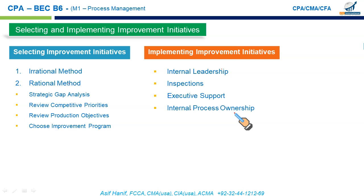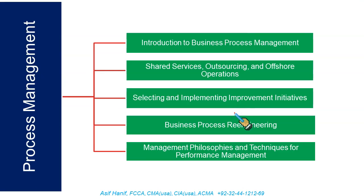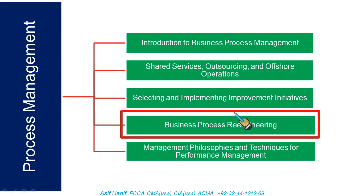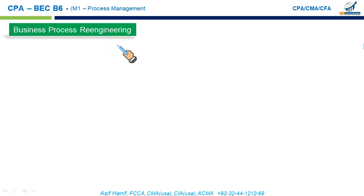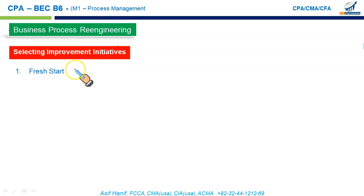Business process re-engineering involves the destruction of an already constructed process and starting from ground zero. It is a fundamental re-thinking and radical change aimed at improving service, cutting costs, or enhancing competitiveness. It is considered very risky. Unlike business process management — which is incremental, step-by-step improvement — business process re-engineering is a radical, fundamental revolution: doing things in a totally different way.